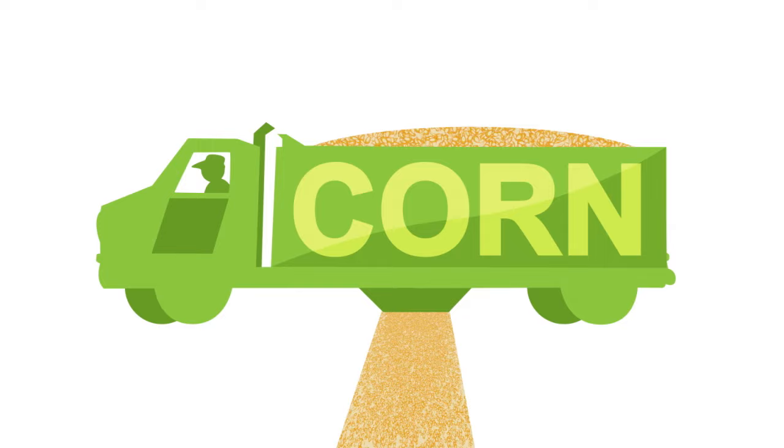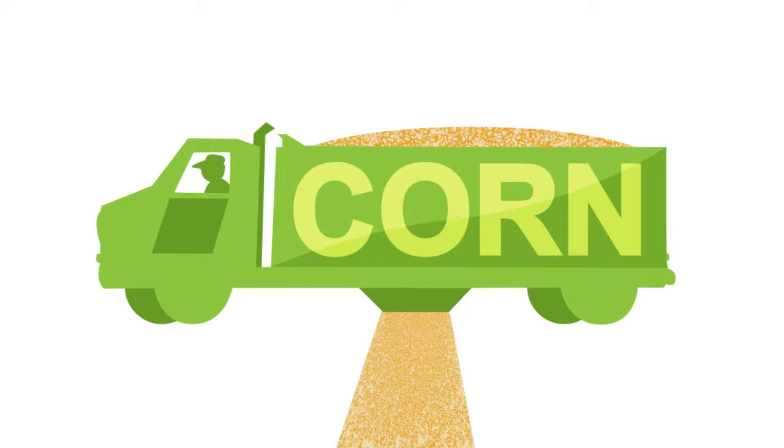It starts when shelled corn arrives at the facility and is quality checked. The corn is then ground to a fine granular consistency so that the starch matter in the kernel is exposed.